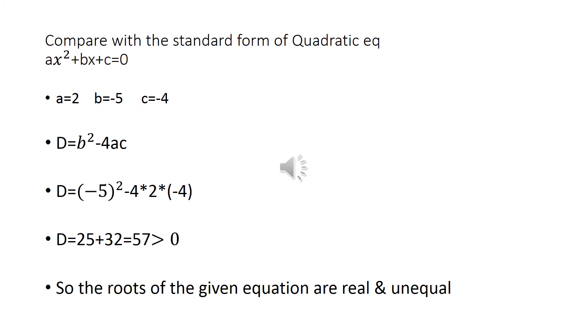First, we will compare the given quadratic equation with the standard form of quadratic equation that is ax square plus bx plus c equals 0. We will get the values of a, b and c, and then we will find the discriminant d with the formula b square minus 4ac.